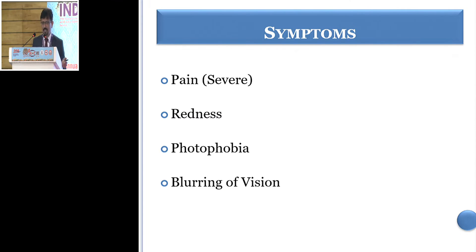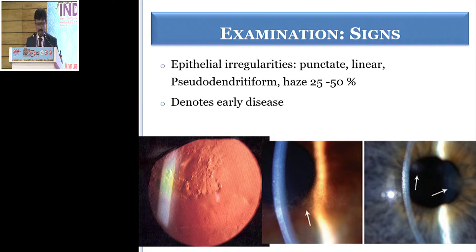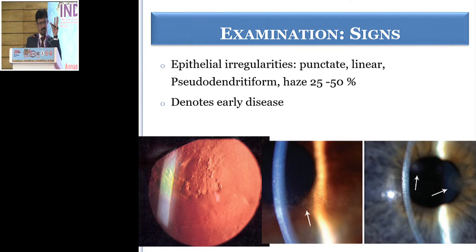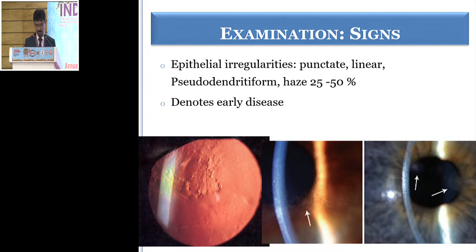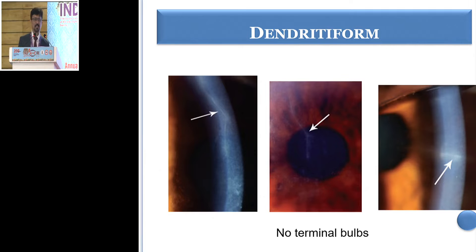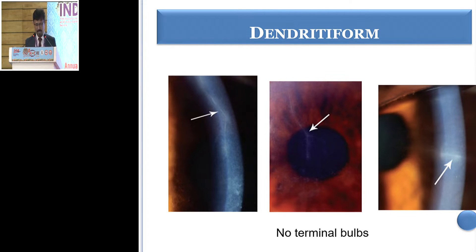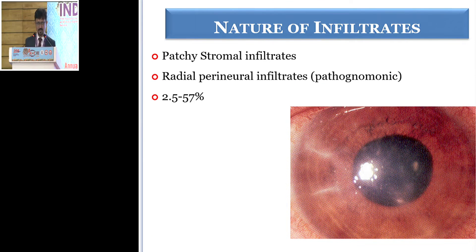Typically the symptoms are the same as any other corneal ulcer; only the pain is quite severe. On examination, if you are lucky enough to get the patient in an early phase, you will see epithelial granularity — that is the earliest sign. Then the patient can have pseudodendrites. In herpetic keratitis you have dendrites with terminal bulbs, whereas here the dendrites have a tapering end, and that is why they are called pseudodendrites.